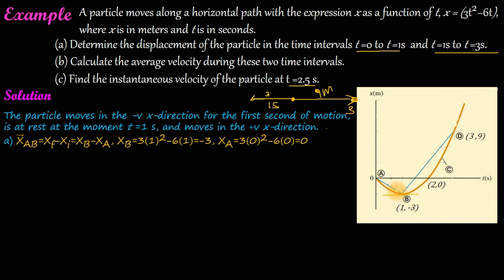Displacement is what we need. We have displacement of AB equals to XF minus X initial, or XB minus XA. We have XB minus XA. Here we have 1, here we have 0. In one second, we need to find the difference.